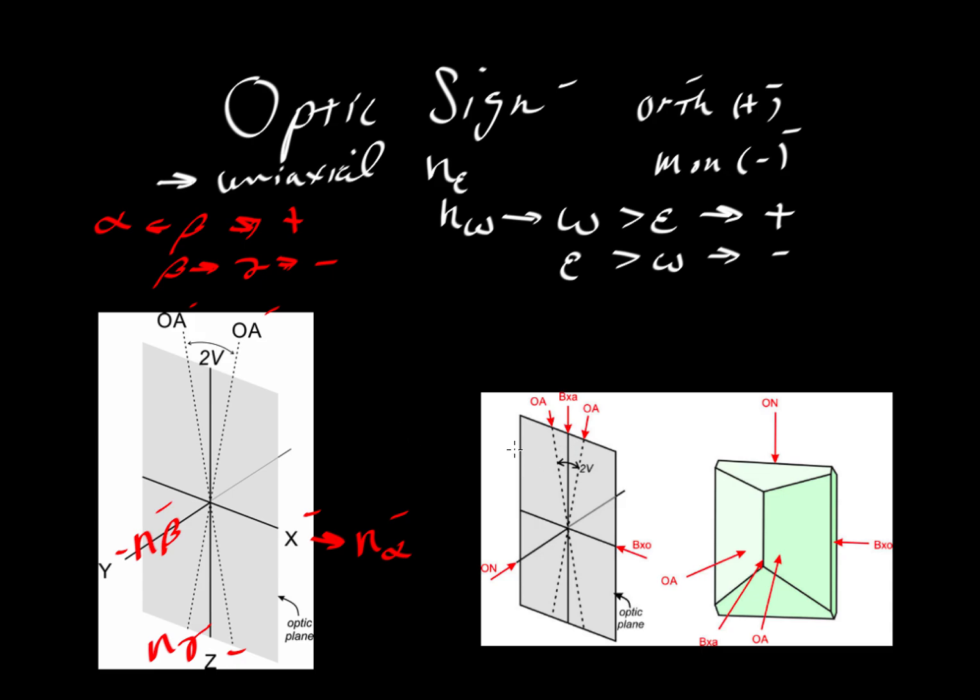There's another way of looking at it, often illustrated in mineralogy textbooks. Both these diagrams are from Dexter Perkins' online mineralogy textbook. This gray plane that contains the x and z axes is the optic plane—the plane that contains the x and z optic axes.